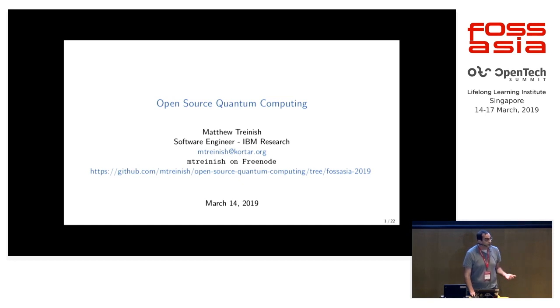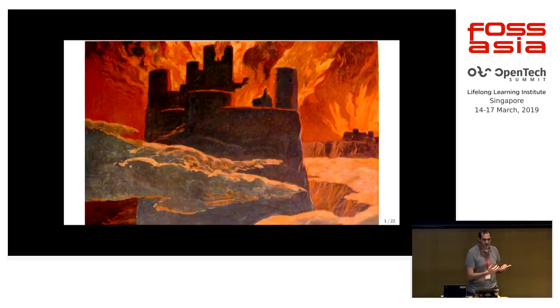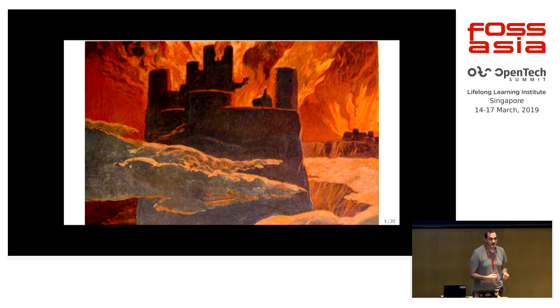To start, we need to really talk about what a quantum computer is, because I find a lot of people have misconceptions. The first one that everyone assumes is that the world is going to be on fire because of something called Shor's algorithm, which was developed in the 90s. It says using a quantum computer, we can factor prime numbers efficiently.